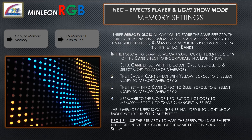Memory settings. Three memory slots allow you to store the same effect with different variations. Memory slots are accessed after the final built-in effect, which is Christmas, or by scrolling backwards from the first effect, Bands. In the following example, we can save four different versions of Cane to incorporate into a light show. First, set the Cane effect with the color green and scroll to Copy to Memory 1. Then save a Cane effect with yellow and Copy to Memory 2. Then set a third Cane effect to blue and Copy to Memory 3. Finally, set the Cane effect to red, but do not copy to memory — scroll to Save Changes and select that. The three memory effects can then be included in a light show with your red Cane effect.